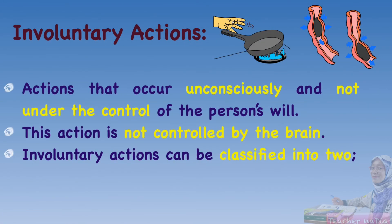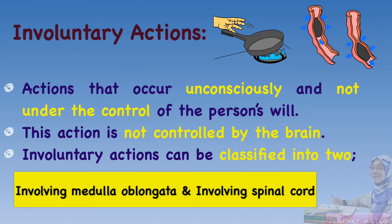For involuntary actions, these are actions that occur unconsciously and not under the control of the person's will. This action is not controlled by the brain. Involuntary actions can be classified into two types: the first involving the medulla oblongata, and the second involving the spinal cord.